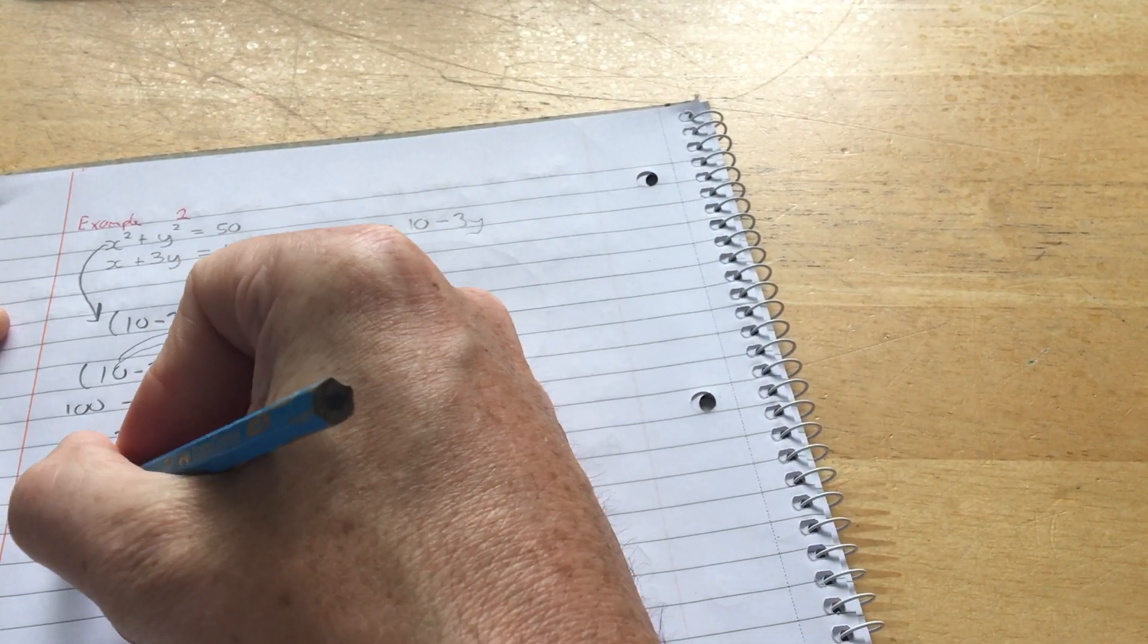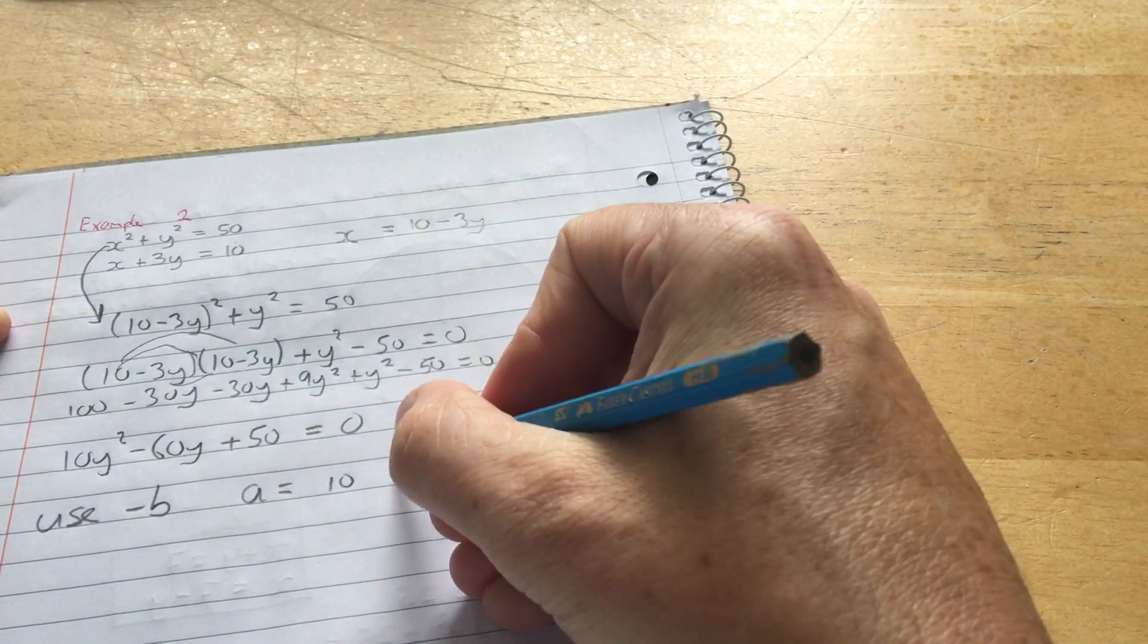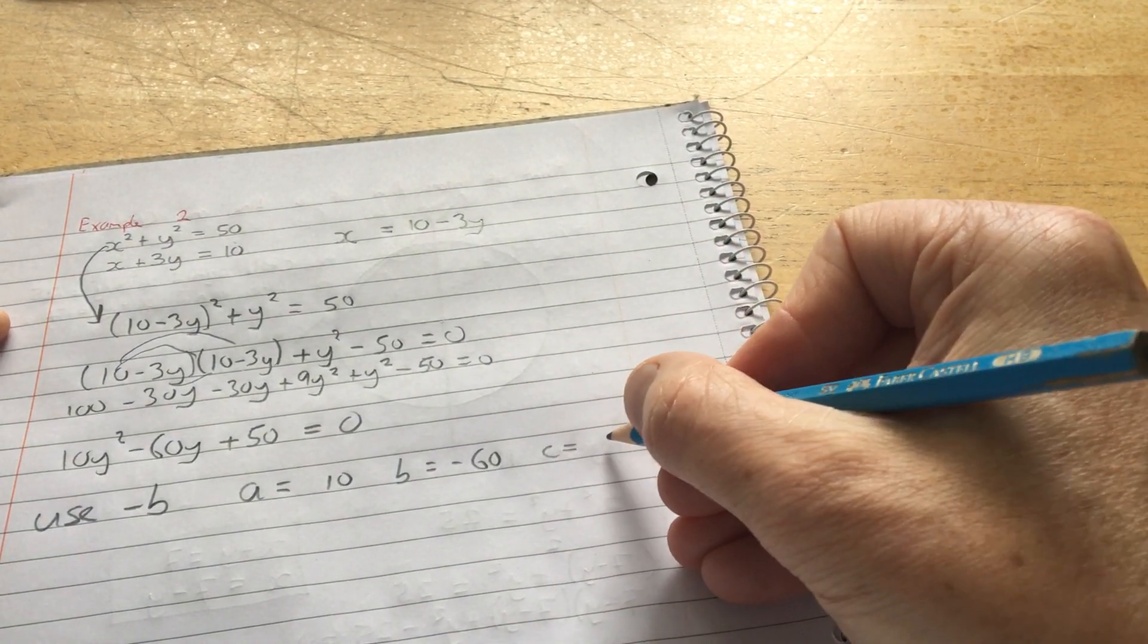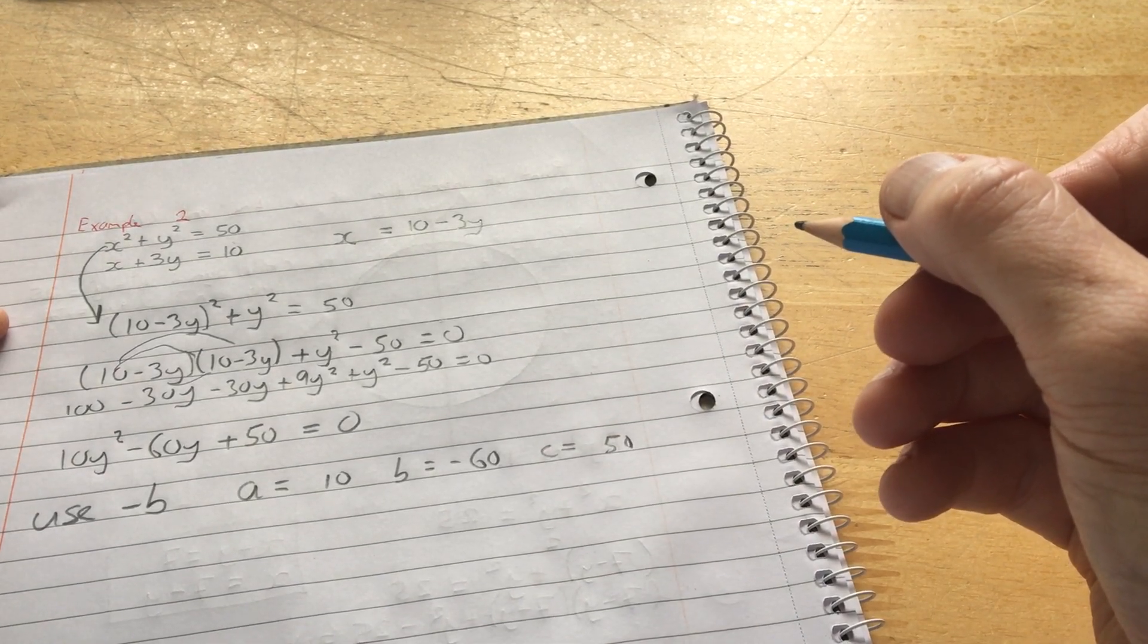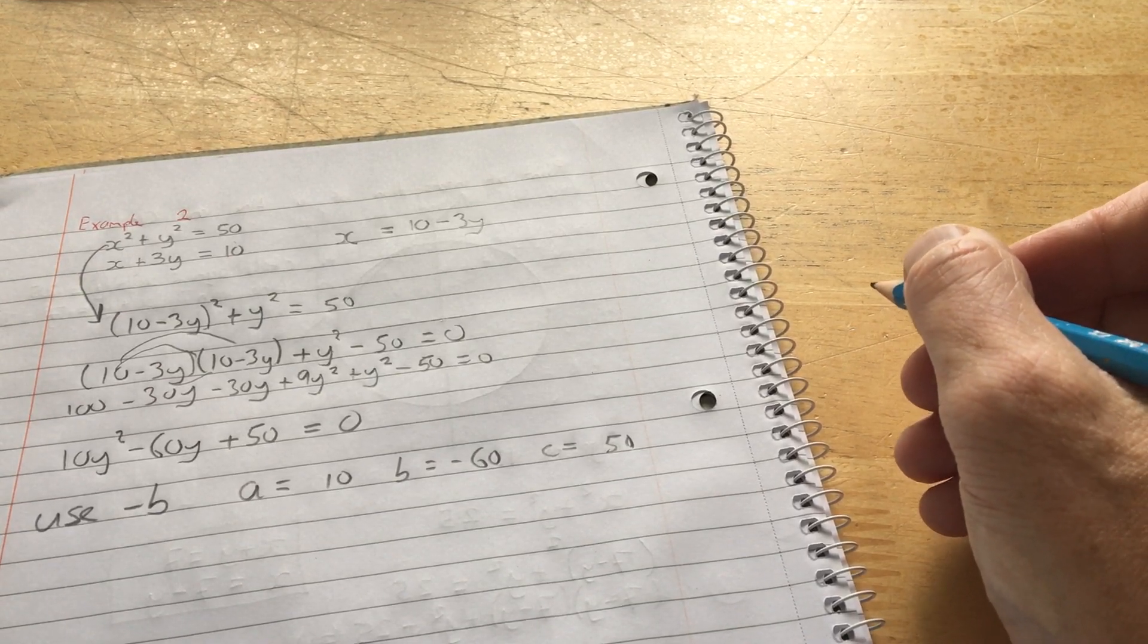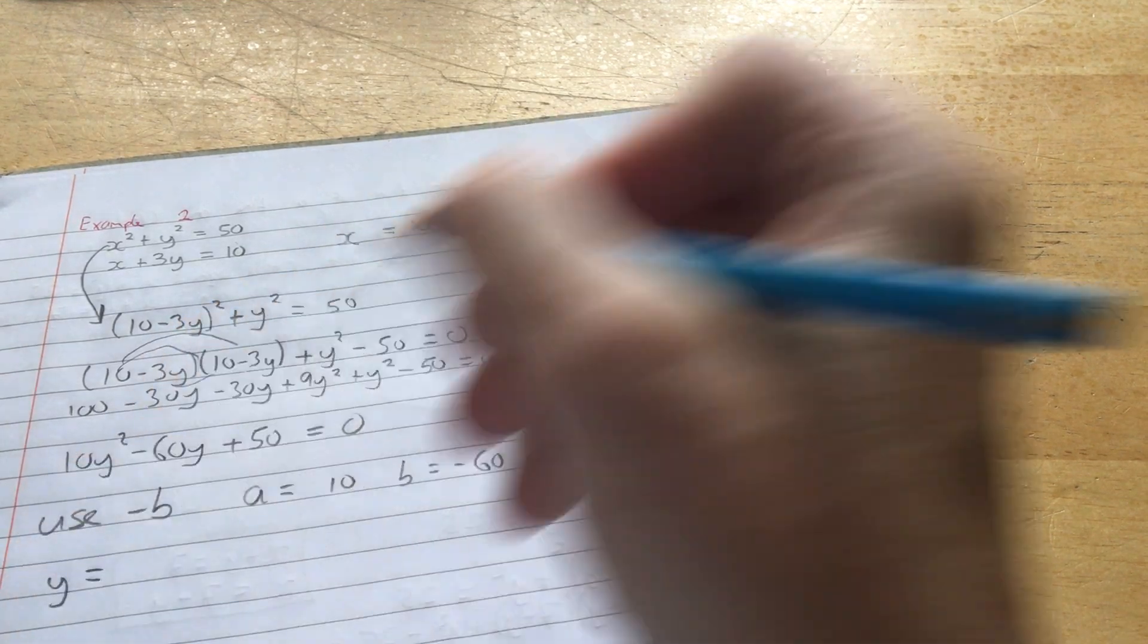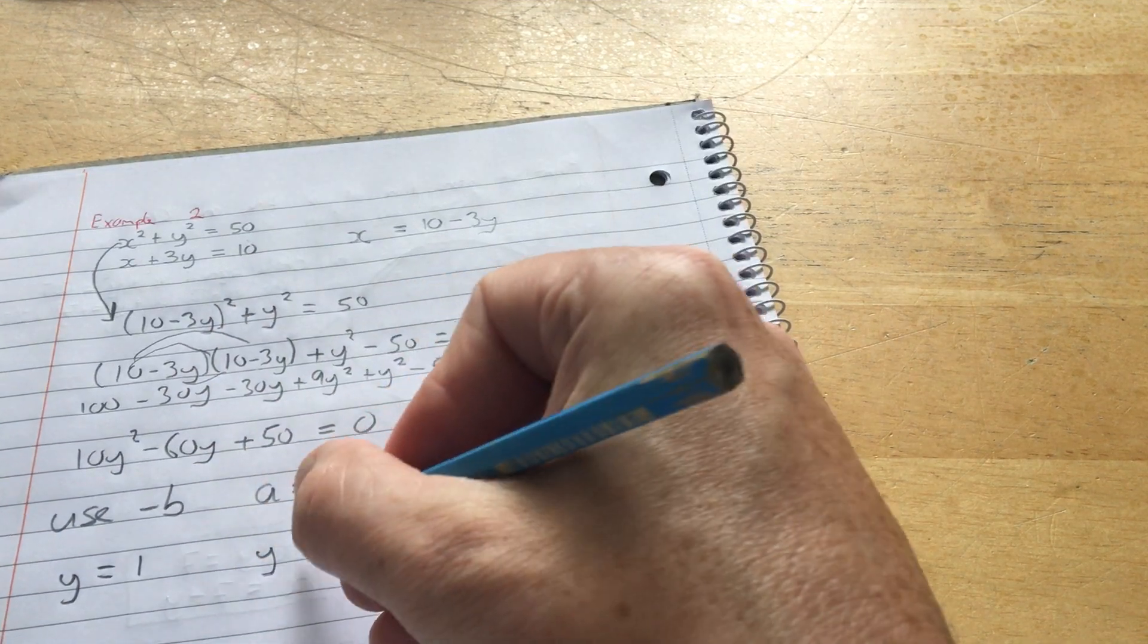Use minus b. With a equals 10, b equals minus 60, and c equals plus 50. When you do that, when you use minus b and solve for minus b, you'll get two answers for y. But I'm not going to do it here. But it's just the minus b rule. You'll get y equals 1 or y equals 5.